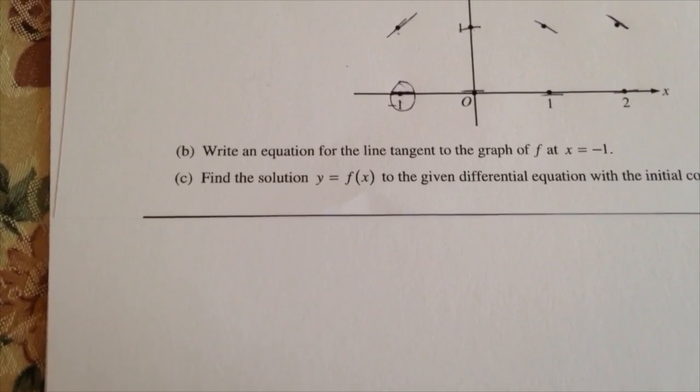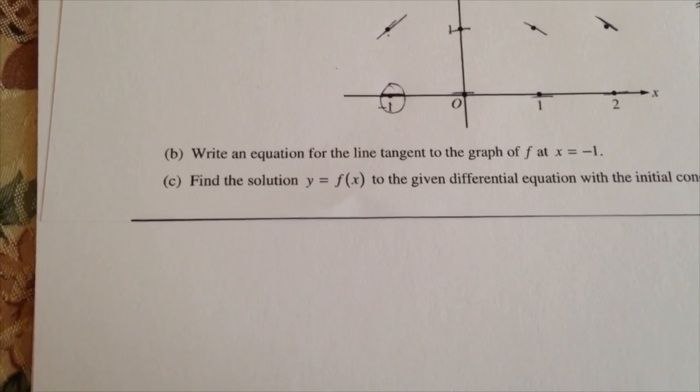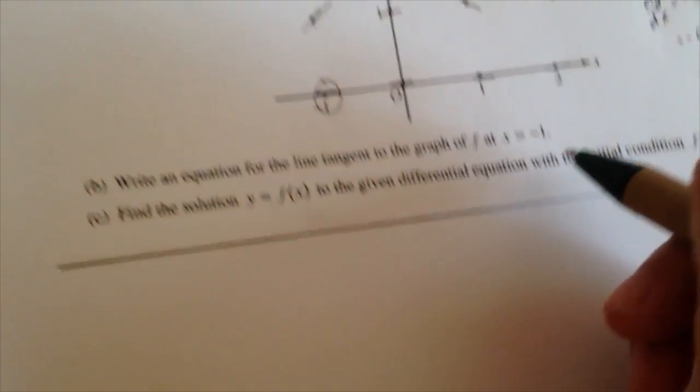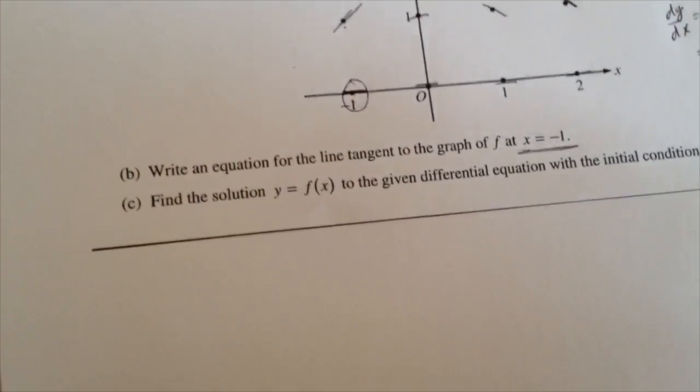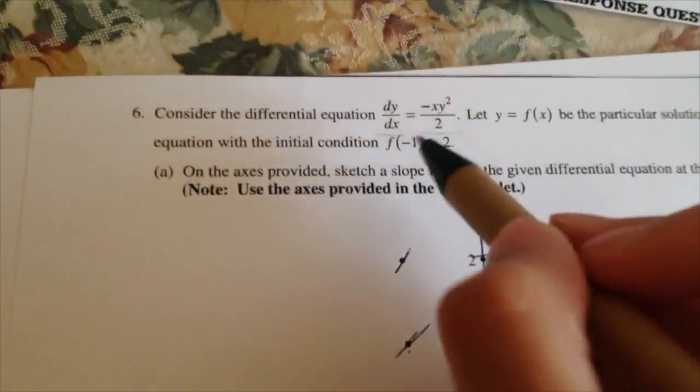Part B asks, write an equation for the line tangent to the graph of f at x equals 1. So they already give you a condition, x equals 1. So what you do is, for part B, use that condition that's given here, which is the same thing as this one.